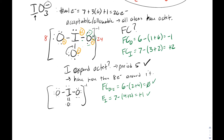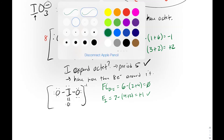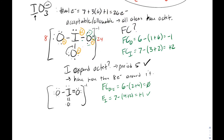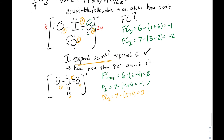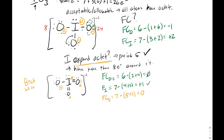We can go further and take another lone pair to form a second double bond. Now iodine has two double bonds and one single bond. The two double-bonded oxygens each have a formal charge of zero, the single-bonded oxygen is still negative one, and iodine's formal charge is now seven minus five plus two equals zero. We can do this only because iodine can expand its octet.